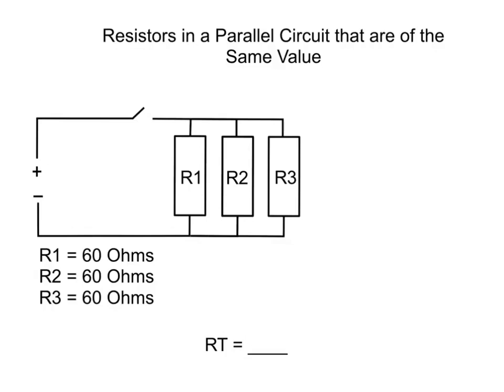Okay, so the formula we're going to use is this: R total equals R over N, where R is the resistor value and N is the amount of resistors in the circuit.